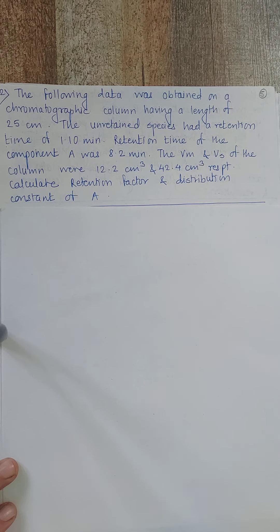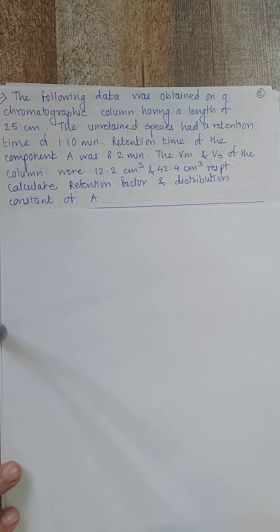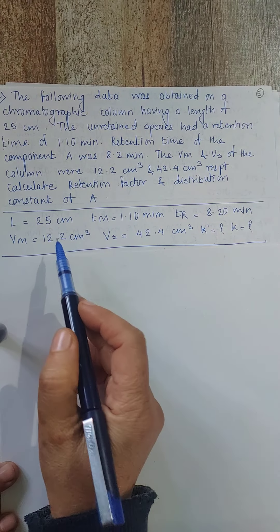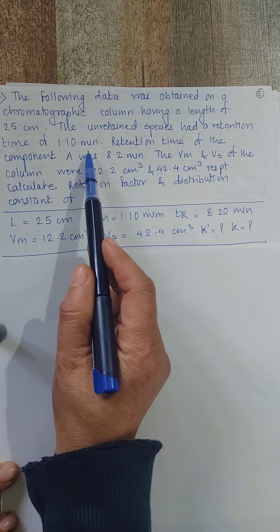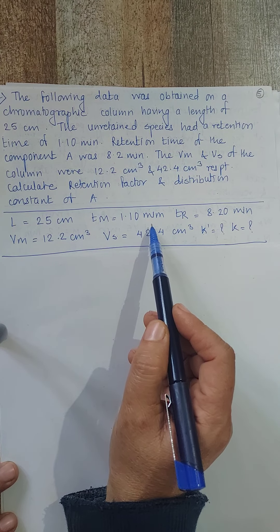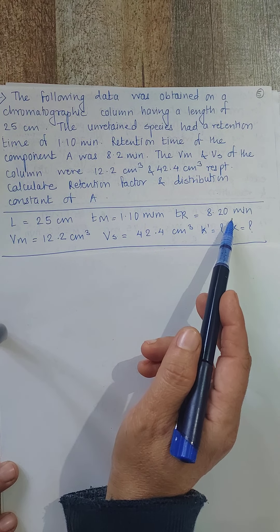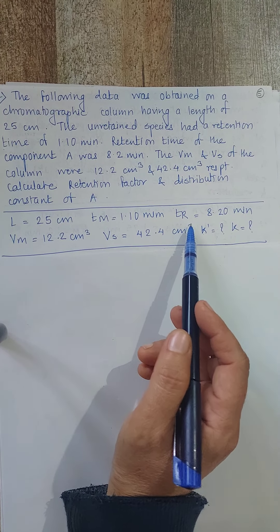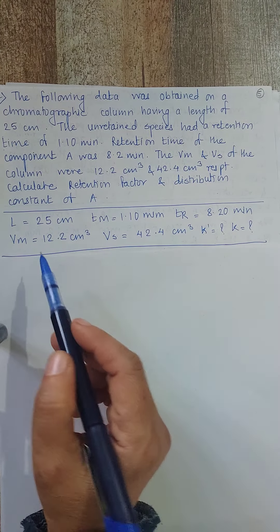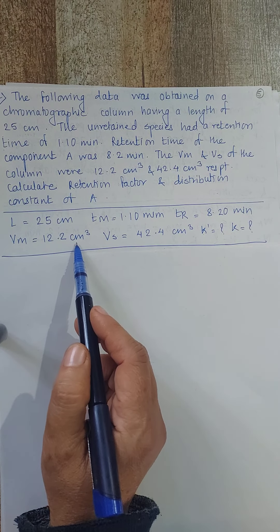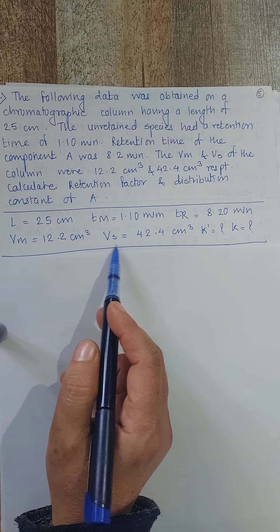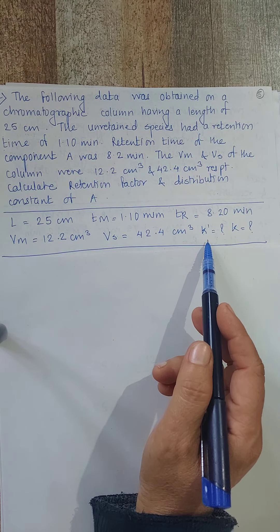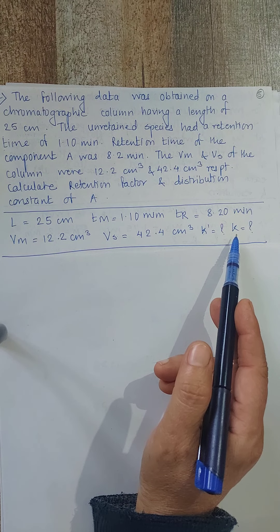Calculate the retention factor and distribution constant of component A. Given: L = 25 cm, TM = 1.10 min, TR(A) = 8.20 min, Vm = 12.2 cm³, Vs = 42.4 cm³. Find k' (retention factor) and k (distribution constant).